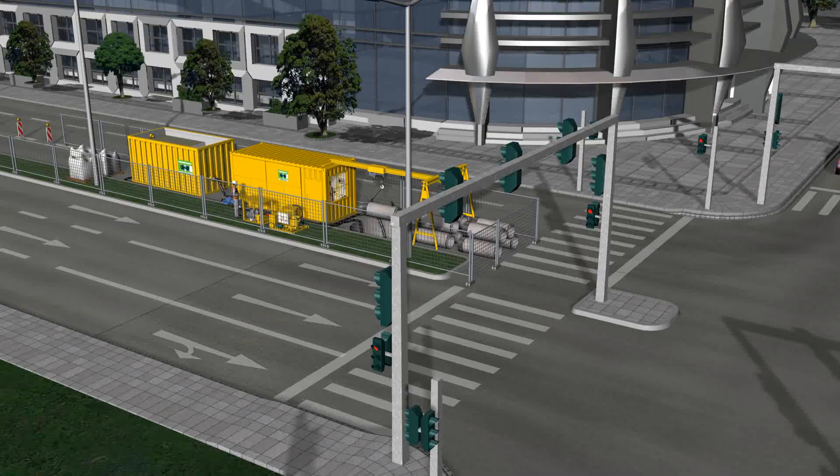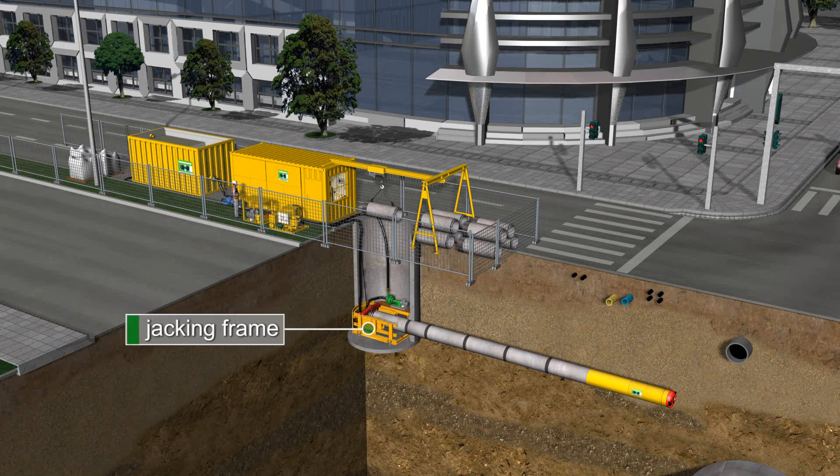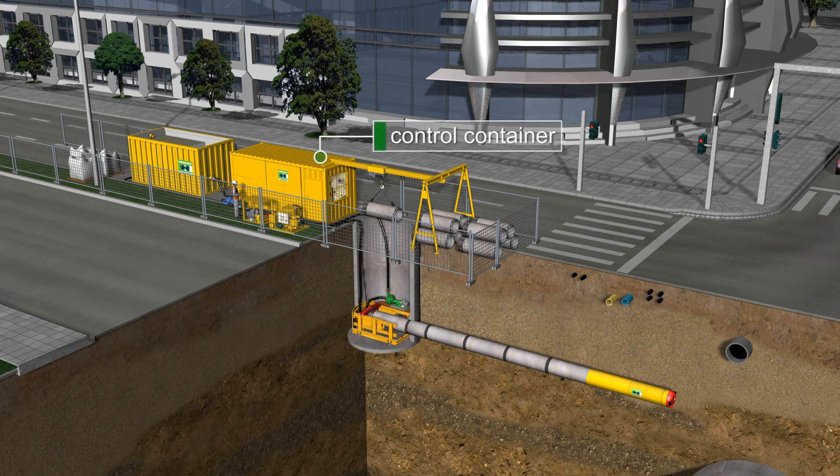In this case, the starting shaft consists of a round shaft of reinforced concrete with an inner diameter of 3.2 meters. The compact jacking frame is then placed into the starting shaft and the slurry discharge pump is mounted on a platform adjacent to the jacking frame. The operating container with the control panel and the hydraulic power pack is located on the top rear side of the shaft.